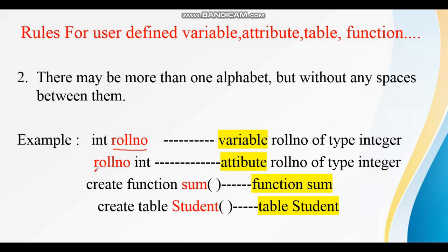Likewise, there is no space between the alphabets in the attribute name. There is no space in the function name — no space between the alphabets of the function. And there is no space between the letters of your table name. So this is the second rule: we can make use of more than one alphabet, but we should not use any spaces between them.